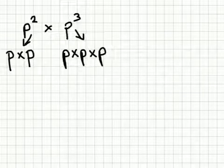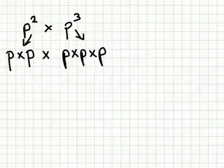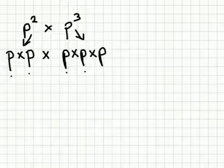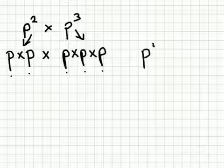Now if we multiply these together, we can see we have a total of 1, 2, 3, 4, 5 p's, so that becomes p to the power 5.